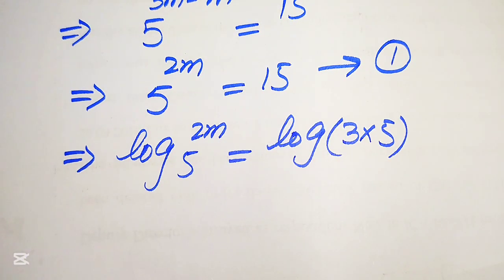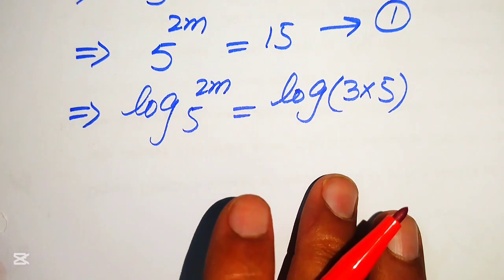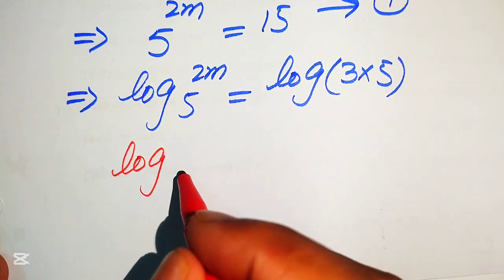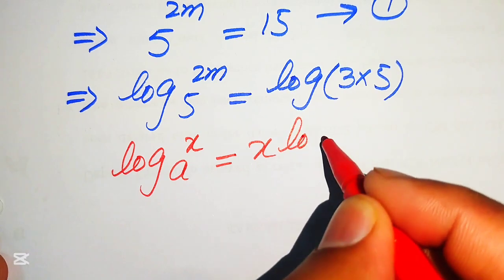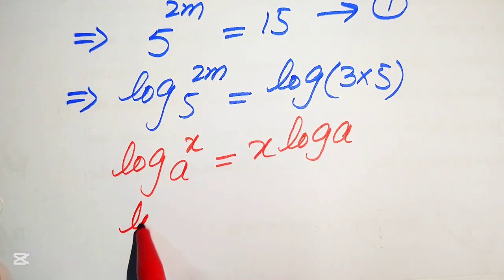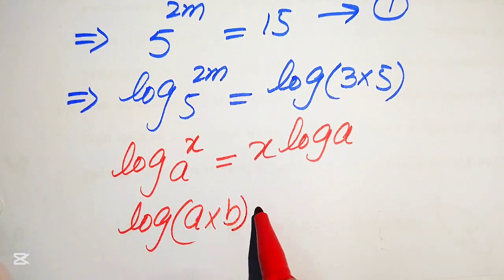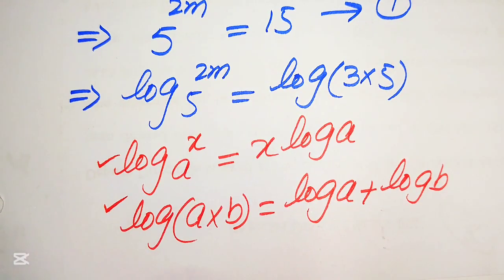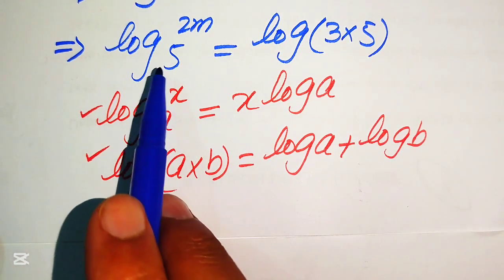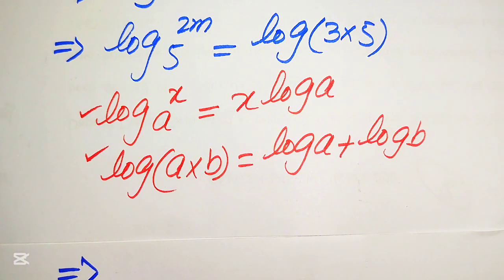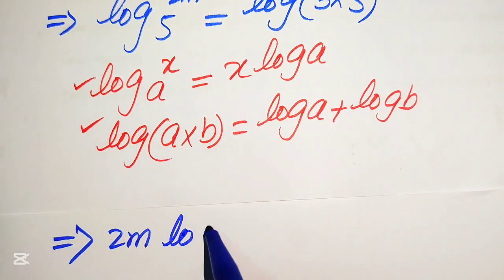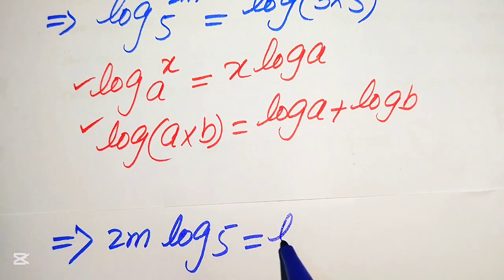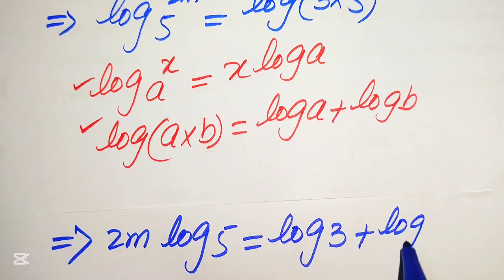We apply two properties of logarithm. First, log of a to the power of x equals x times log a. Second, log of a multiplied by b equals log a plus log b. Applying the first property to the left-hand side, we move 2m in front of the log, giving 2m times log 5. Applying the second property to the right-hand side gives log 3 plus log 5.